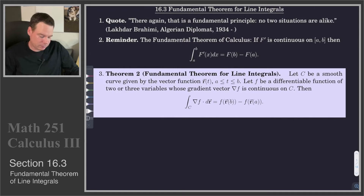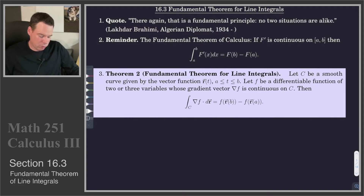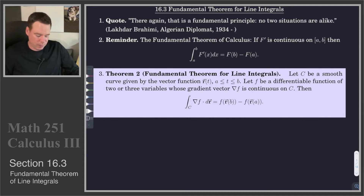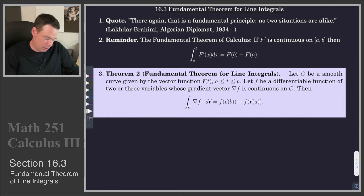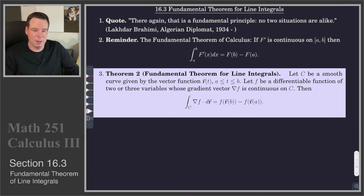What it says is that if C is a smooth curve given by the vector function r of t over the interval a to b, and we assume that f is a differentiable function of two or three variables whose gradient is continuous on C, then integrating the gradient along the curve can be found by taking the value of the potential function at the endpoints and taking their difference. We're thinking of the gradient as a kind of derivative, and the antiderivative of it as the potential function.